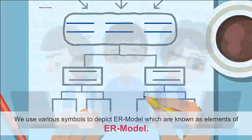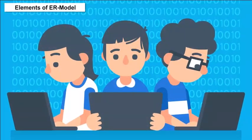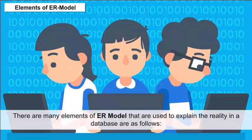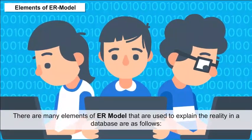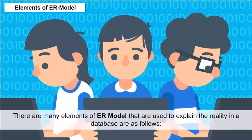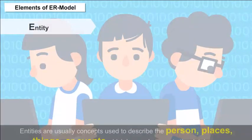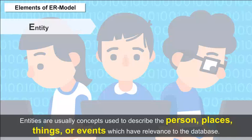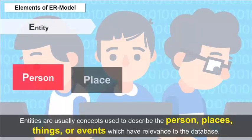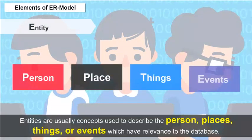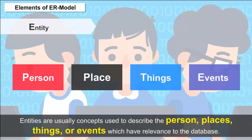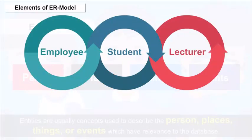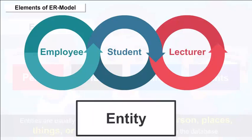We use various symbols to depict the ER model, which are known as Elements of ER Model. There are many elements of ER model used to explain reality in a database. Entity — entities are usually concepts used to describe persons, places, things, or events which have relevance to the database. Some examples of entities are employee, student, and lecturer. It is represented as a rectangular box.